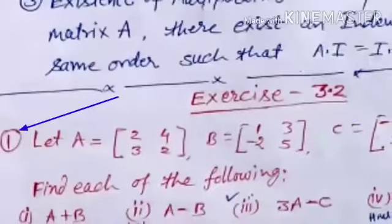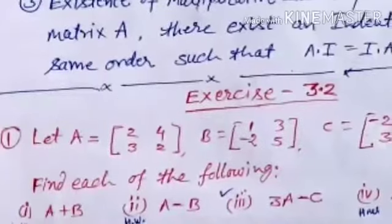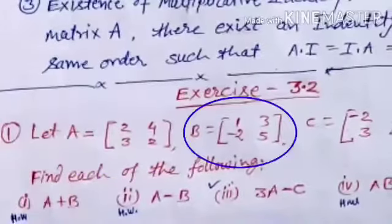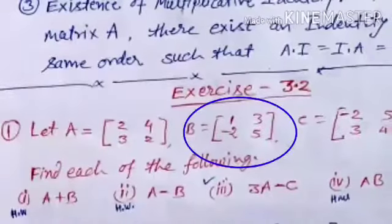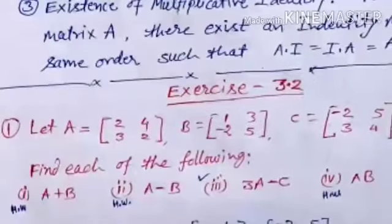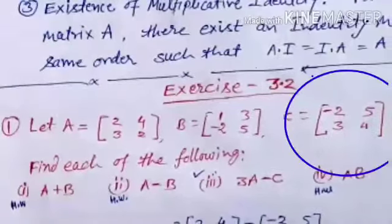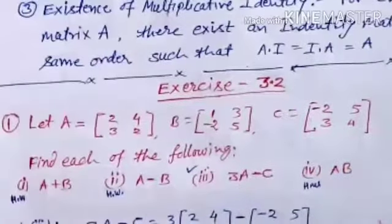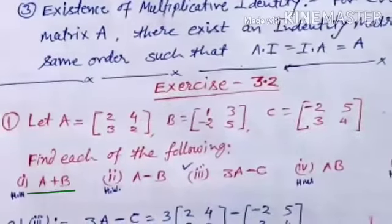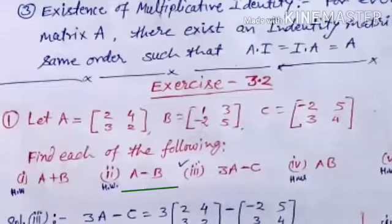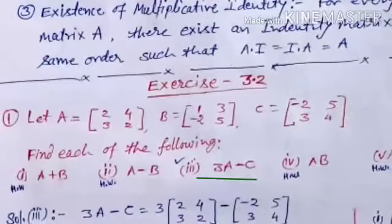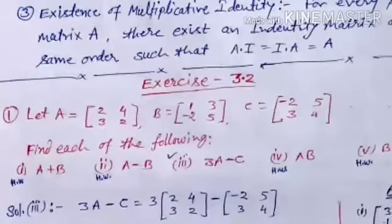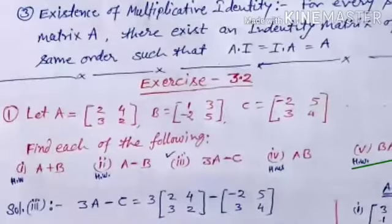Our first question: matrix A is equal to [2, 4; 3, 2], matrix B is [1, 3; -2, 5], and matrix C is [-2, 5; 3, 4]. Find each of the following: first A plus B, second A minus B, third 3A minus C, fourth A into B, and fifth B into A.